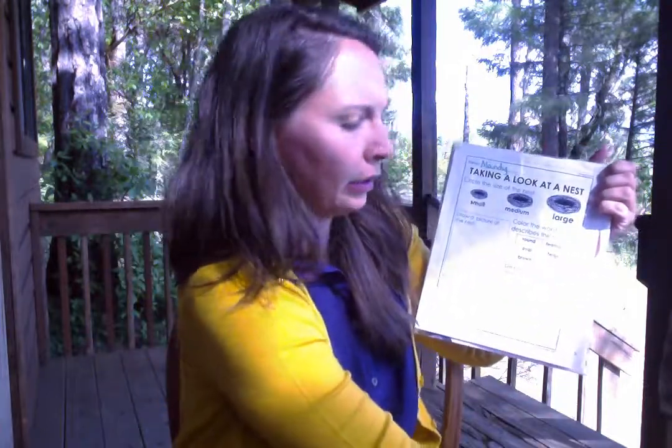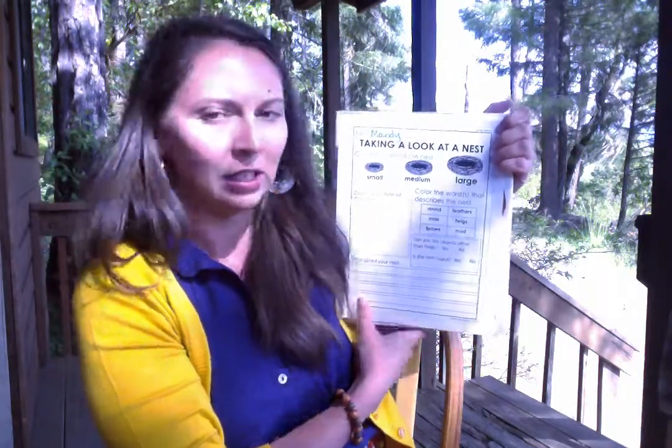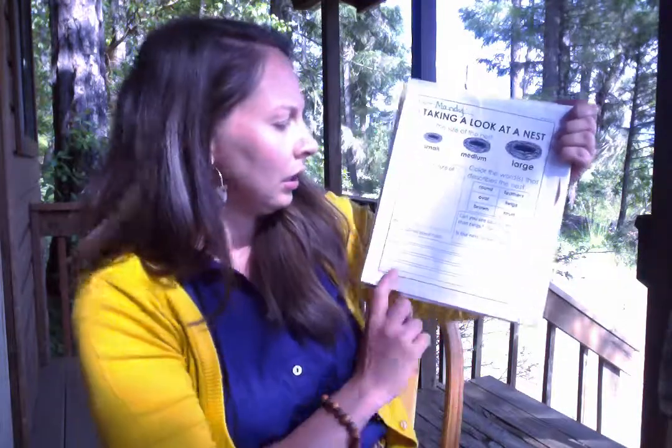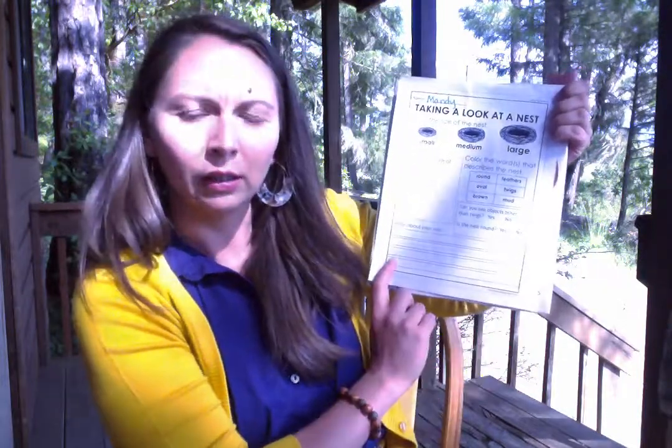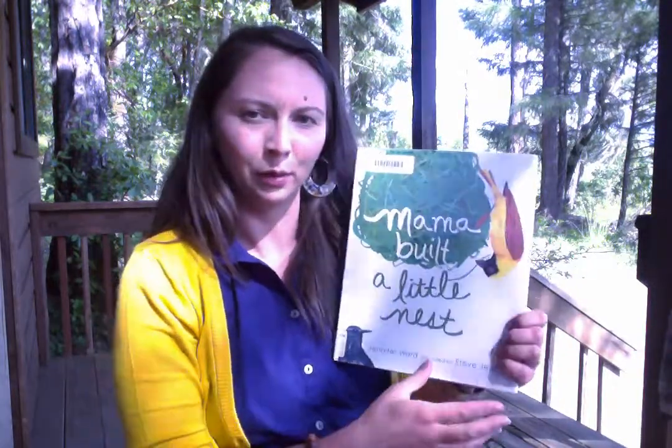Use some words to describe the nest. You can color in the word choices with a highlighter or crayon — words like round, feathers, oval, twigs, brown, or mud. If those aren't good enough, use your own words and come up with some writing to describe the nest using good details. The story is called 'Mama Built a Little Nest' by Jennifer Ward.